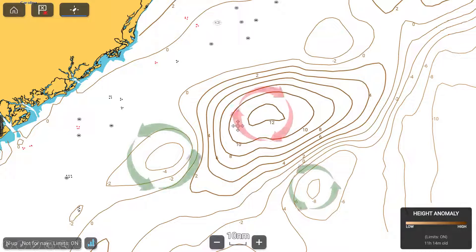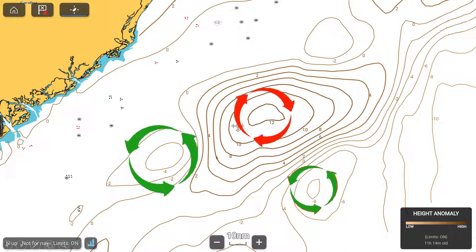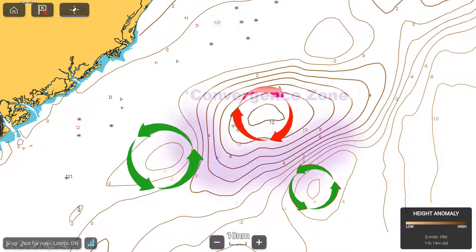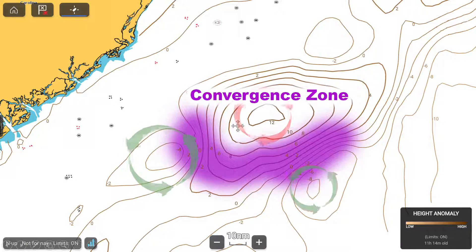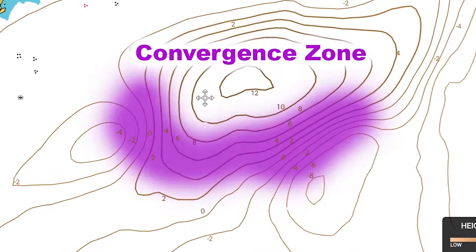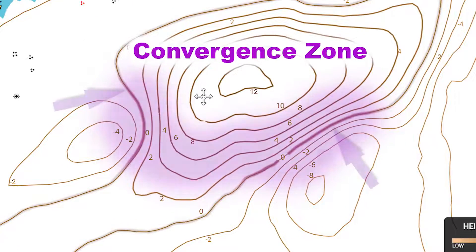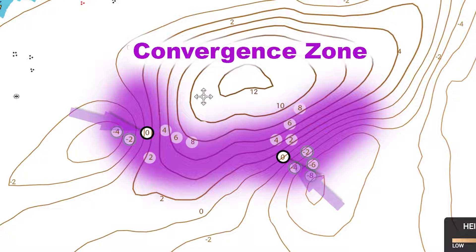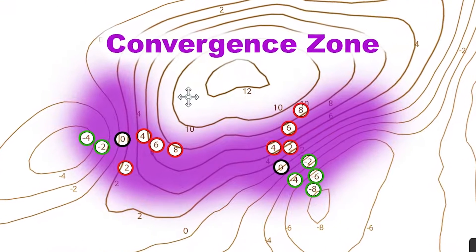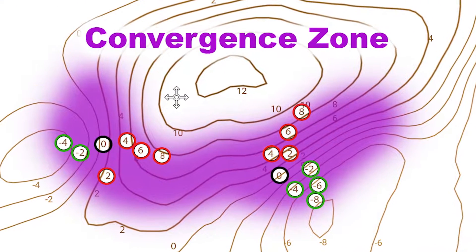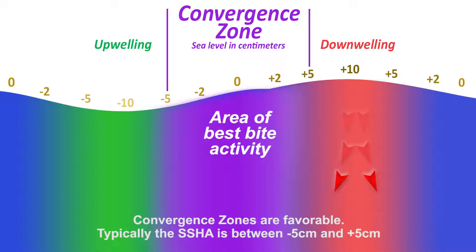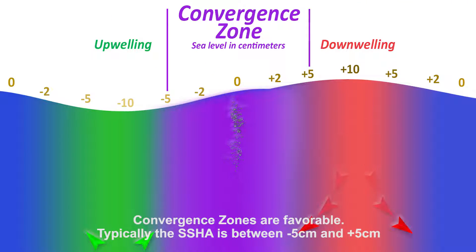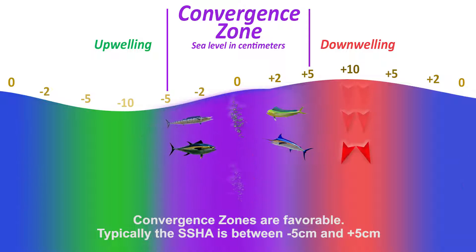Lastly, where prominent upwellings and downwellings occur close together is referred to as a convergence zone. Finding the line in this area with the number zero, near a line with a negative number on one side and a positive number on the other side, is ideal. These convergence zones are likely to have increased bait fish activity.